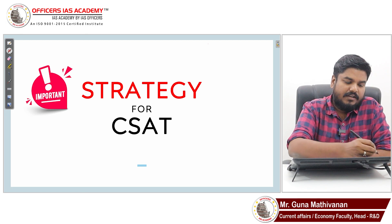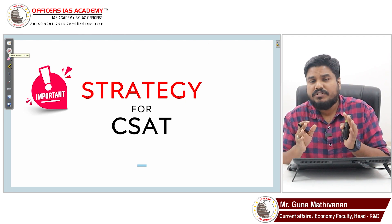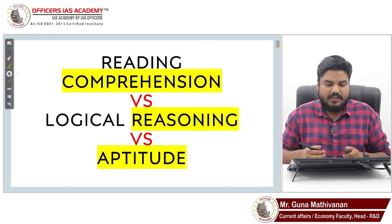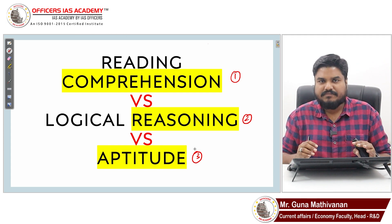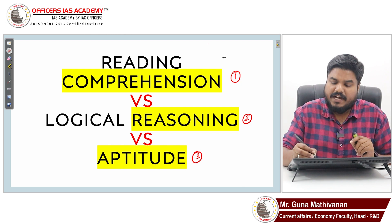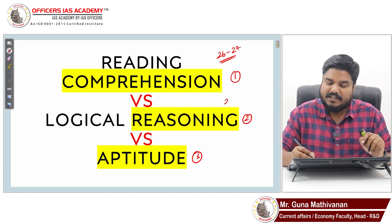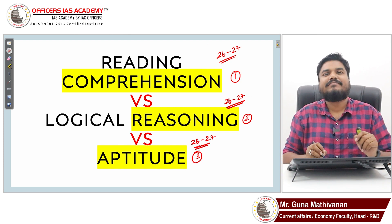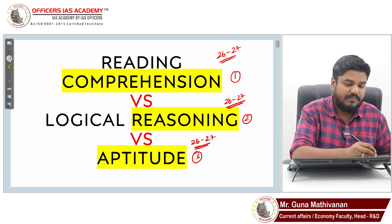Coming to the strategy for CSAT — as I said, we need a structural approach, not a randomized one. Three areas are tested: reading comprehension, logical reasoning, and aptitude. Before 2018, the trend showed roughly 26 to 27 questions from each of these three areas, with 80 questions asked in total.